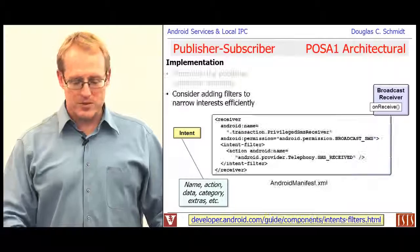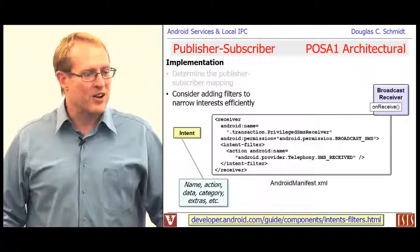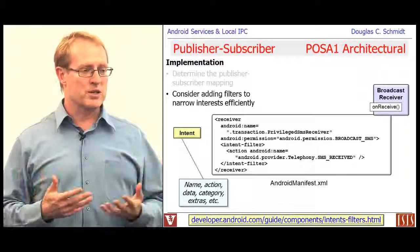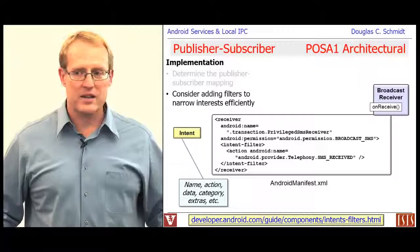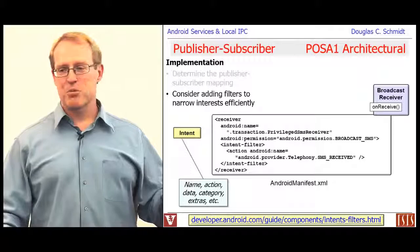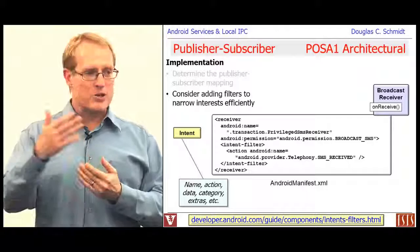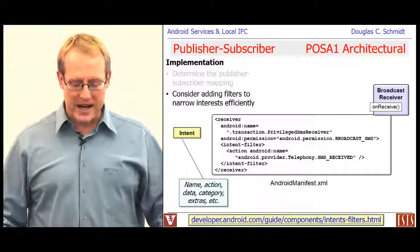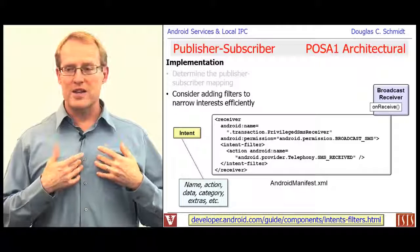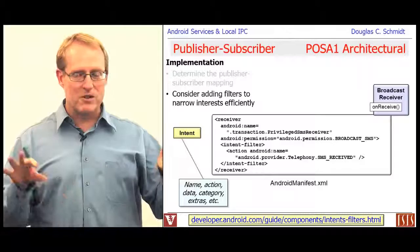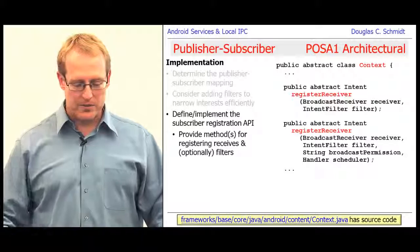In Android, filtering is done through intent filters. You can define them dynamically by creating an intent filter and registering it when you call registerReceiver. You can also use the manifest file to specify different actions and data. You will only receive stuff that matches your filters — it's like a sieve, and only things passing through the filter are delivered to the broadcast receivers.